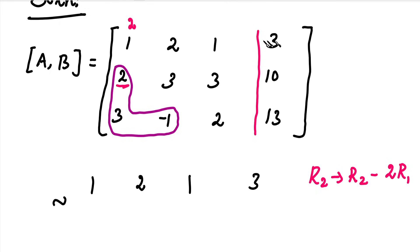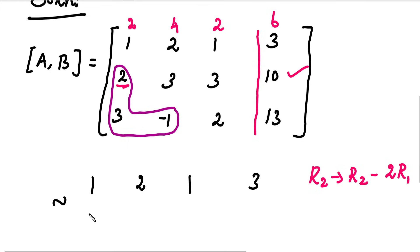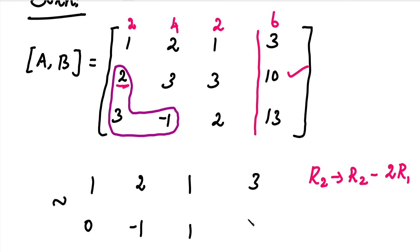We multiply the elements in R1 by 2 and subtract from R2. So in the new second row: 2 minus 2 equals 0. Then 3 minus 4 equals minus 1. Then 3 minus 2, and 10 minus 6 equals 4. So the new R2 is: 0, minus 1, 1, 4.